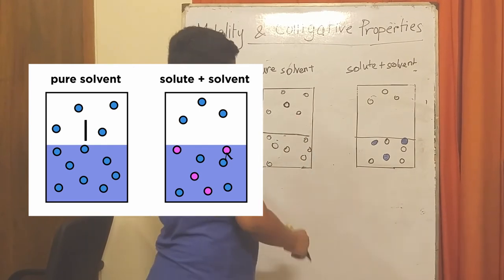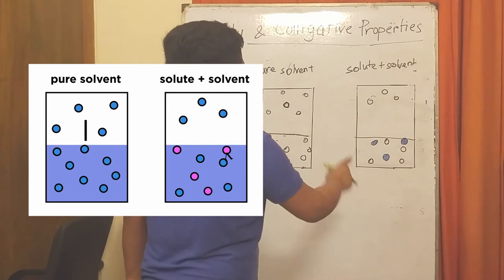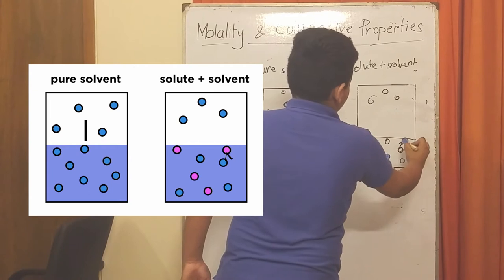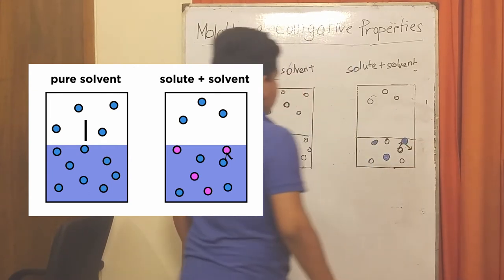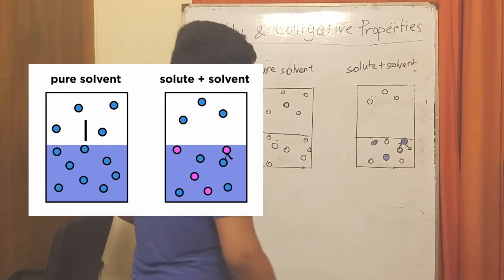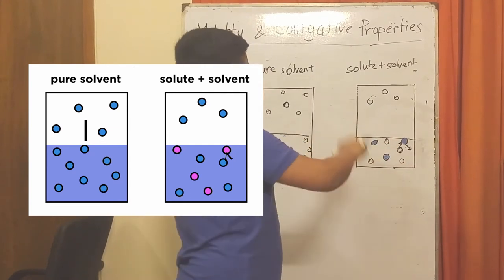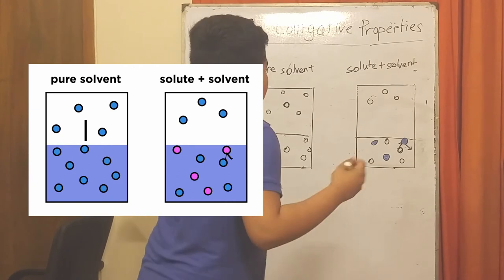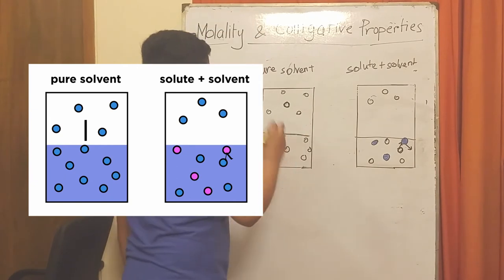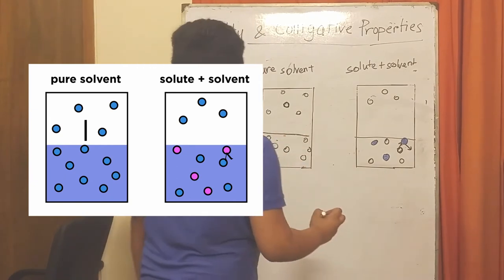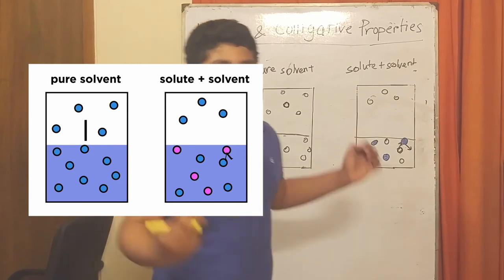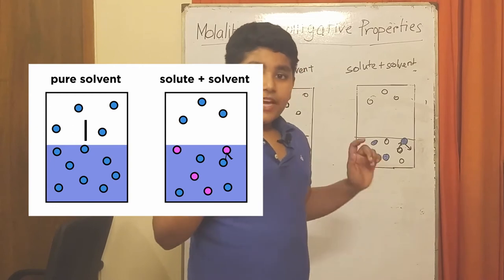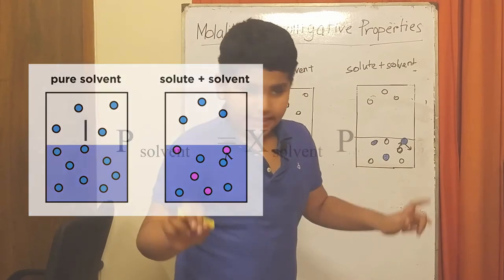But when there's a solute in the way, you won't get very much vapor pressure because the particles will block the way of the solvent, and therefore there will be much lower pressure. The more solute we add, the less the vapor pressure will be.